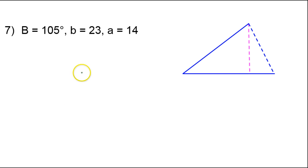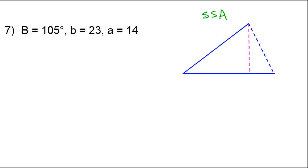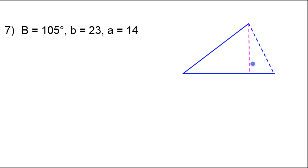In this video, we will continue solving triangles using the law of sines when confronted with the ambiguous case. The ambiguous case is when we have the side-side-angle set of information given — two sides and the non-included angle. At a glance, we're given two sides and an angle, and that's going to be side-side-angle. We call it the ambiguous case because we don't know whether or not these measures will even form a triangle, and if so, it could form one triangle or it could form two triangles. It's ambiguous.